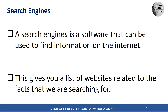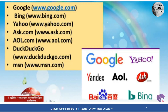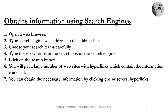For example, if we are searching about the beautiful places in Kandy, it gives a list of hyperlinks related to beautiful places in Kandy. That is the specialty of the search engine — we don't need to remember the web addresses of websites. The most popular search engines are Google, Bing, Yahoo, Ask.com, AOL.com, and DuckDuckGo. There are many more search engines and you can use any of them to search the internet.